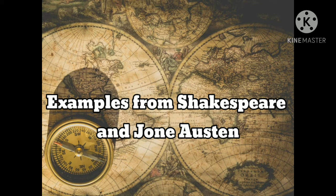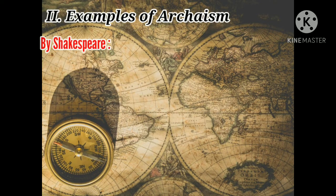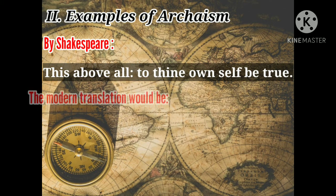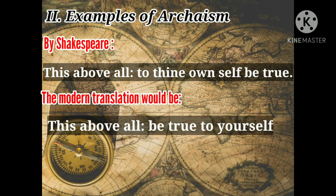Because archaisms are by definition no longer used much, here are a few examples from Shakespeare and Jane Austen with their meanings explained. Examples of archaism by Shakespeare: 'This above all, to thine own self be true.' The modern translation would be: 'This above all, be true to yourself.'